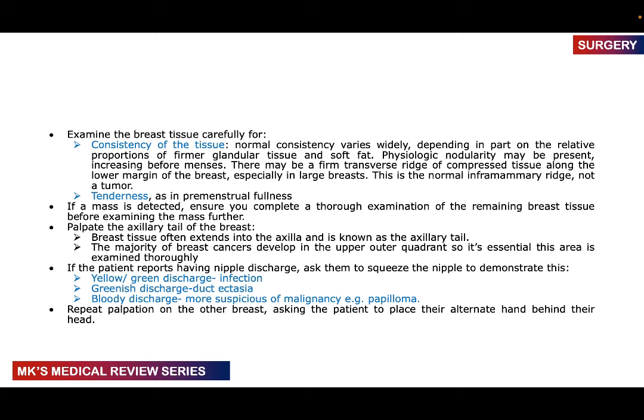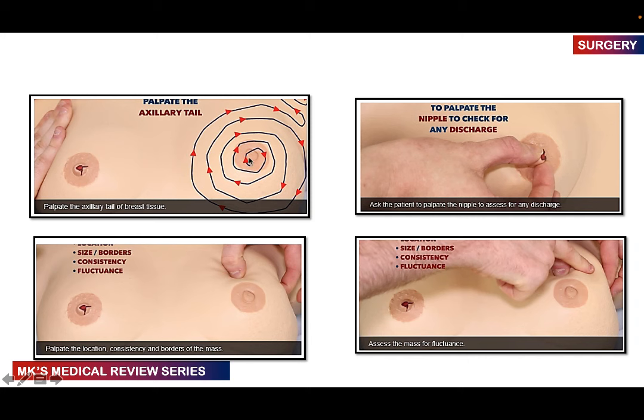If you detect a mass, complete the thorough examination of that breast and the remaining breast, then come back to examine the mass. Don't forget to palpate the axillary tail extending into the axilla — the majority of breast cancers are in the upper outer quadrant, where most breast tissue is found. If the patient reports nipple discharge, at the end of palpation ask them to squeeze the nipple. Yellowish or greenish discharge could suggest infection; greenish discharge could indicate duct ectasia; blood discharge is suspicious for malignancy. Palpate the axillary tail and repeat for the other breast using the spiral technique.